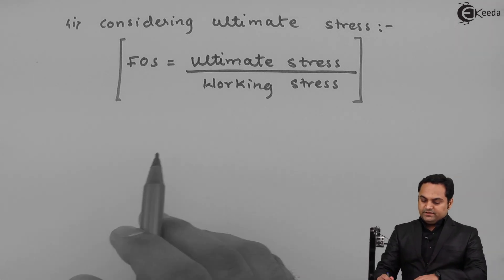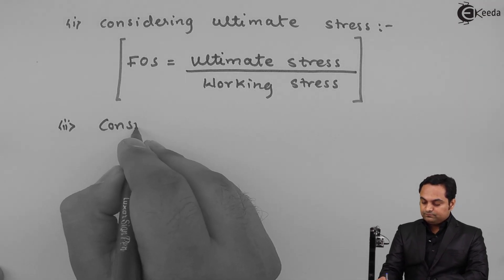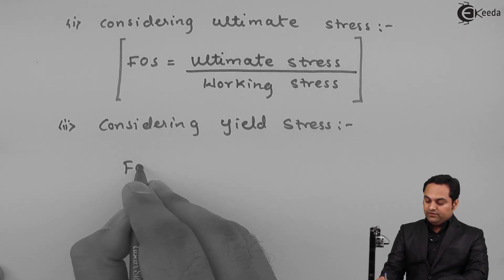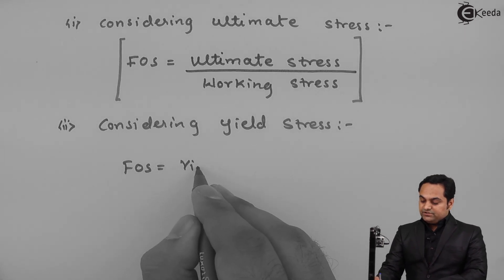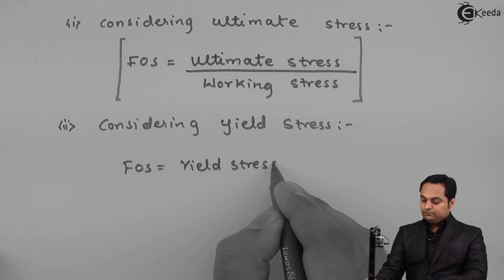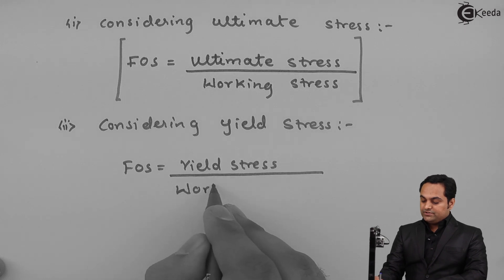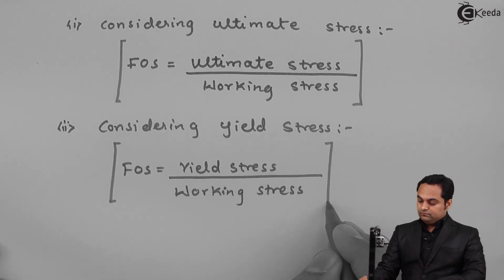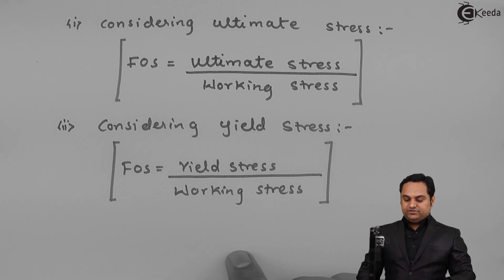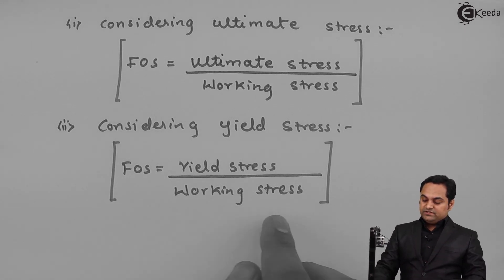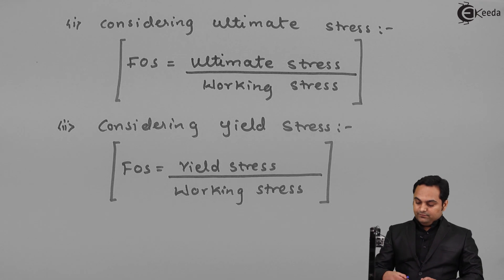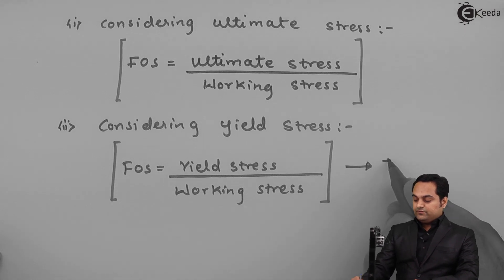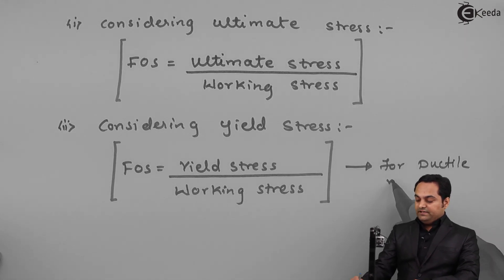Considering yield stress: factor of safety is given by yield stress divided by working stress. This form of factor of safety — using the yield stress — is mostly used for ductile materials.